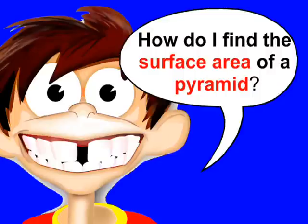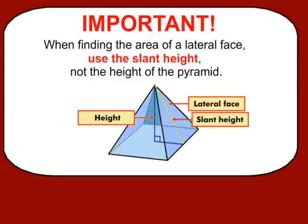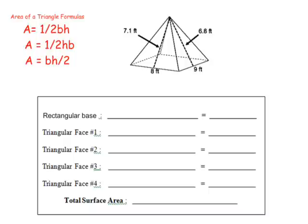So how do you find the surface area of a pyramid? Slant height is going to be really important when we're calculating the area of the lateral faces. Let's do one. Here we have a rectangular pyramid — it has a rectangular base. We're going to start with finding the area of the base, which is length times width: 8 times 9 equals 72 square feet.